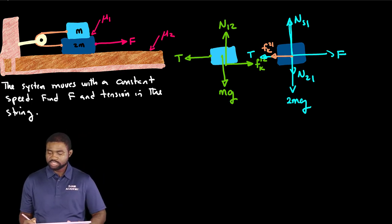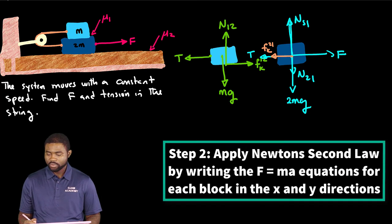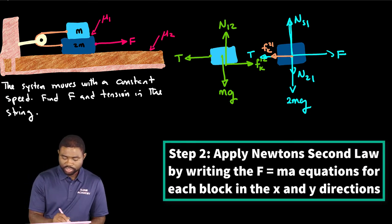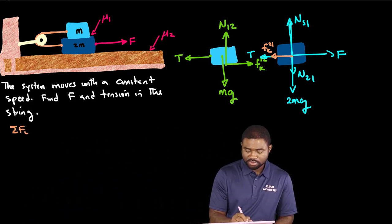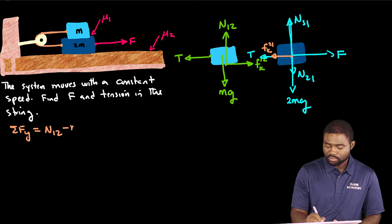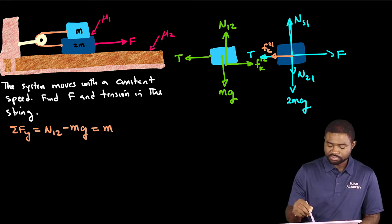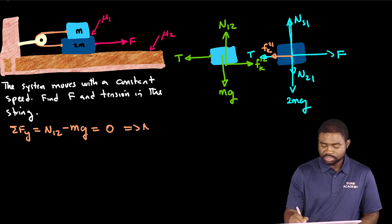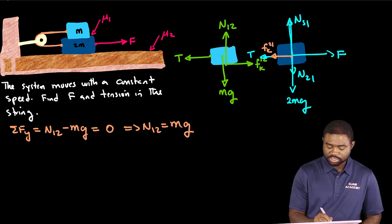So the next step is for us to apply Newton's second law for both block one and block two. We recognize that the summation of Fy is equal to N12 minus mg. This is equal to zero. This means that N12 is equal to mg.